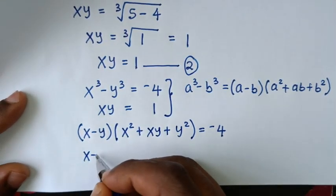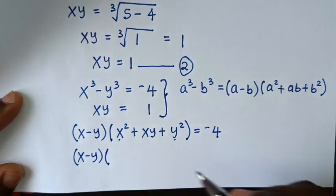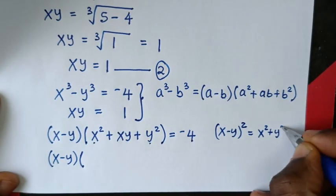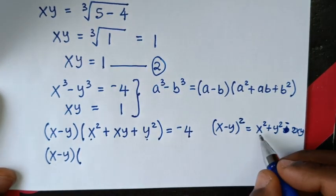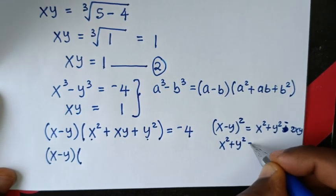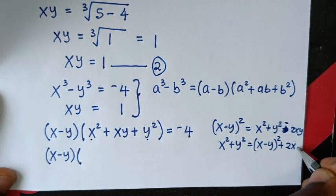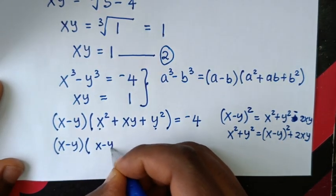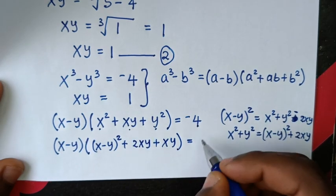We relate x² + y² to (x − y)². Since (x − y)² = x² + y² − 2xy, we get x² + y² = (x − y)² + 2xy. Substituting back, we have (x − y)[(x − y)² + 2xy + xy] = −4.